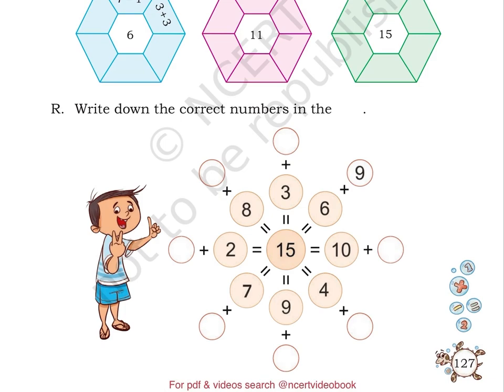Next to each of these numbers is an addition sign along with a blank circle. You have to fill in the circle with a number which gives us 15 after addition. For example, 1 has been solved for you. 15 is equal to 6 plus 9.